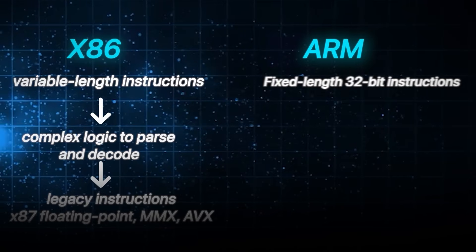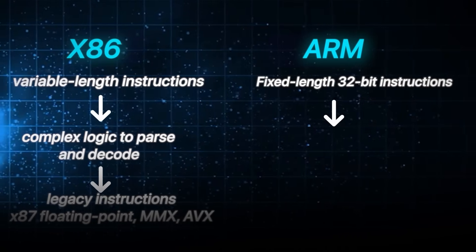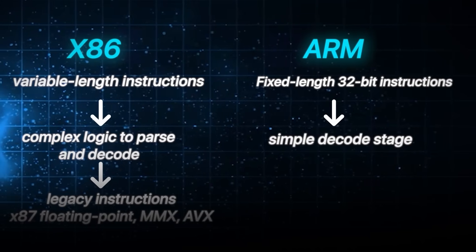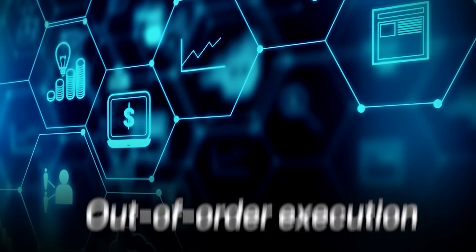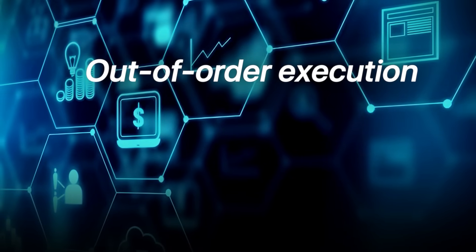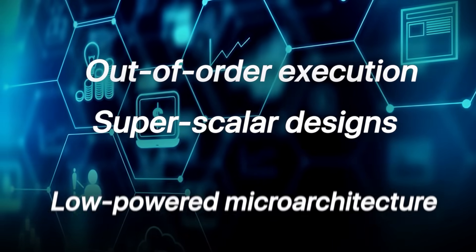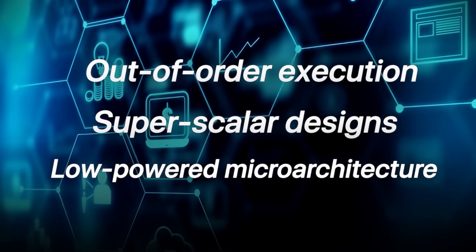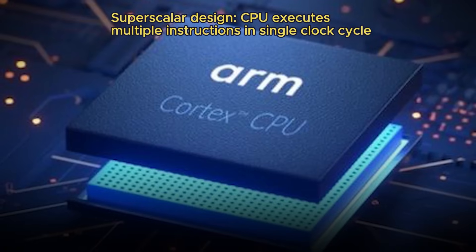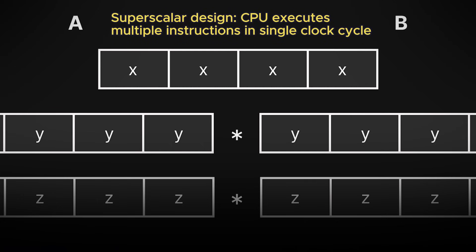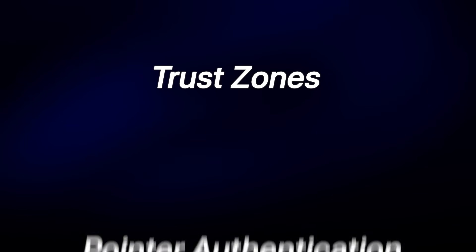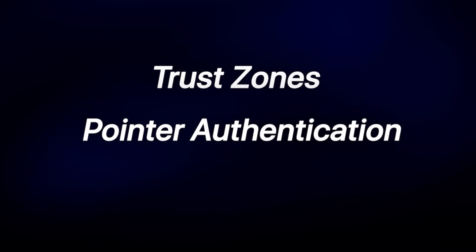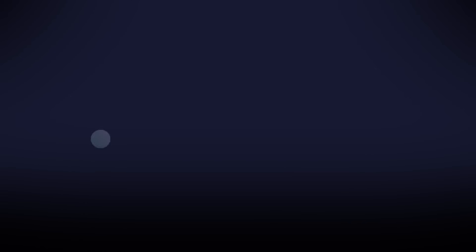ARM, in contrast, uses fixed-length 32-bit instructions that simplify the decode stage and improve pipeline predictability. This makes out-of-order execution, superscalar designs, and low-power microarchitecture easier to implement efficiently. Modern ARM cores support SIMD extensions and advanced features like TrustZone, pointer authentication, and speculative execution protection.